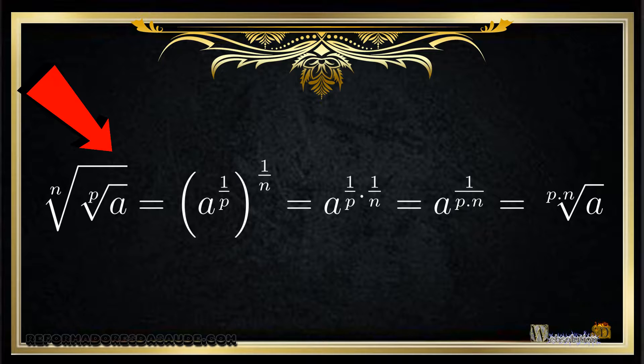So we have the root n from the root p of a. Normally speaking it's very bad to calculate the exercise without reading it, but here we are going to read it.